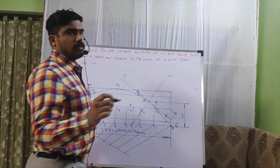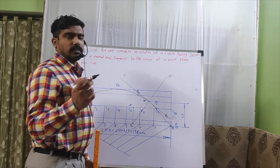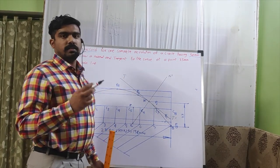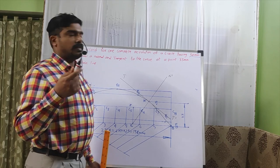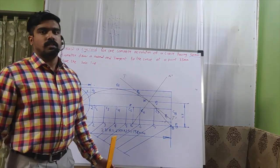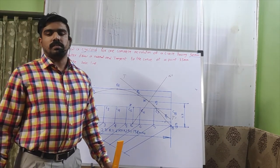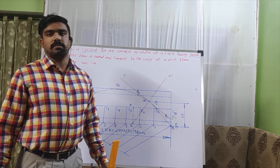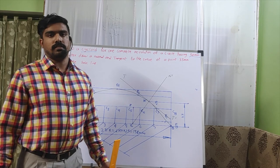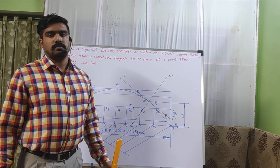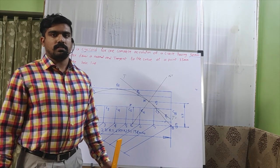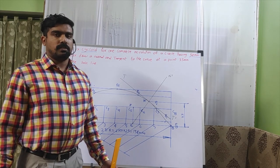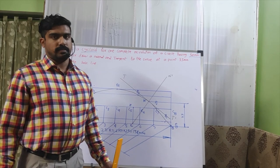The tangent and the normal and the cycloid must be drawn with an H grade pencil; all remaining construction lines must be drawn with a 2H grade pencil. In the next class, we are going to discuss the epicycloid.